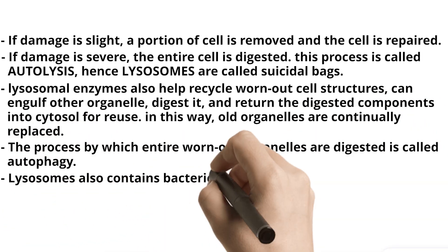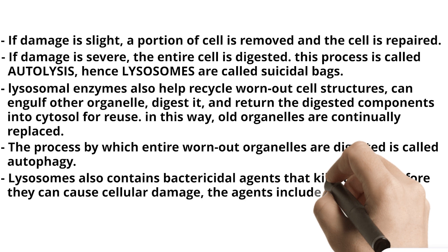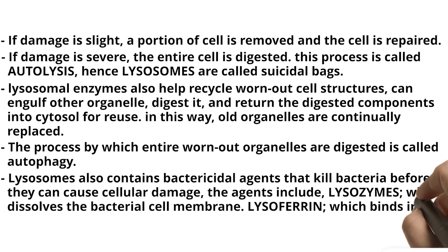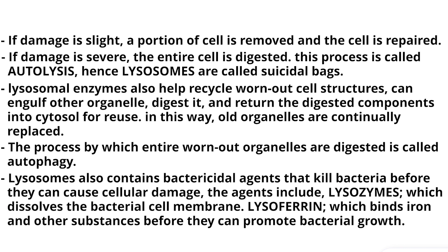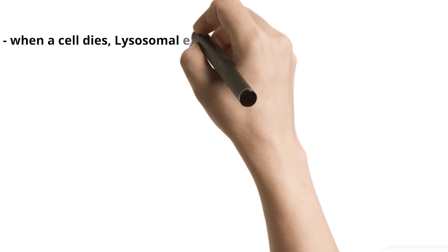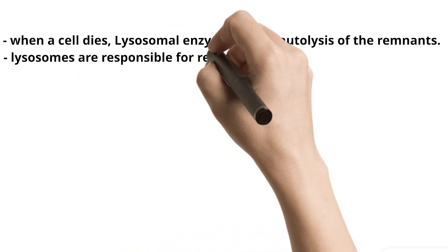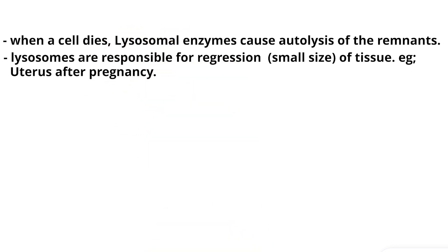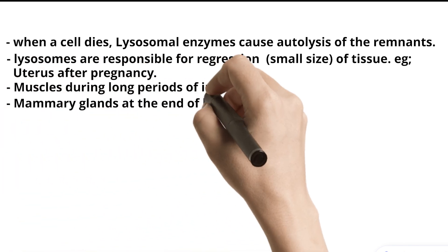Lysosomes also contain bactericidal agents that kill bacteria before they can cause cellular damage. These agents include lysozyme, which dissolves the bacterial cell membrane, and lysoferrin, which binds iron and other substances before they can promote bacterial growth. When a cell dies, lysosomal enzymes cause autolysis of the remnants. Lysosomes are also responsible for regression (reduction in size) of tissues — for example, the uterus after pregnancy, muscles during long periods of inactivity, and mammary glands at the end of lactation.